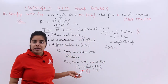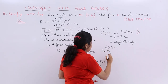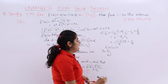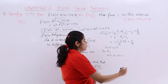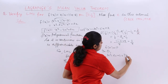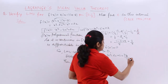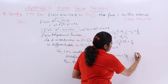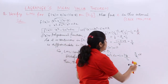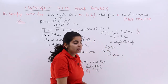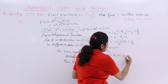Substituting into equation (1): F'(C) = [F(b) - F(a)] / (b - a) = [3/8 - 0] / [1/2 - 0] = (3/8) / (1/2) = 3/4. So we have 3C² - 6C + 2 = 3/4.